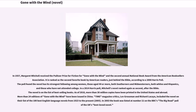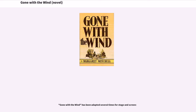In 1937, Margaret Mitchell received the Pulitzer Prize for Fiction for Gone with the Wind and the second annual National Book Award from the American Booksellers Association. It is ranked as the second favorite book by American readers, just behind the Bible, according to a 2008 Harris Poll. The poll found the novel has its strongest following among women, those aged 44 or more, both Southerners and Midwesterners, and both whites and Hispanics. In a 2014 Harris Poll, Mitchell's novel ranked again as second after the Bible. As of 2010, more than 30 million copies have been printed worldwide, and more than 24 editions have been issued in China. Time magazine critics included the novel on their list of the 100 best English language novels from 1923 to 2005.